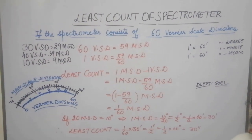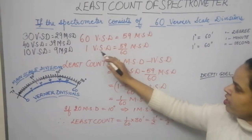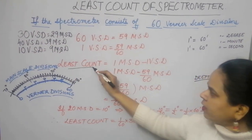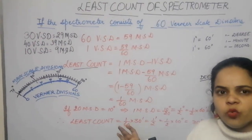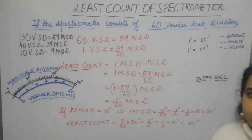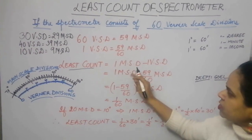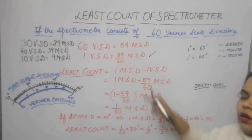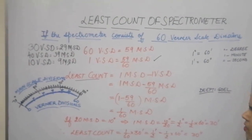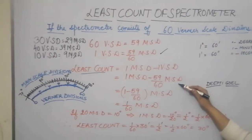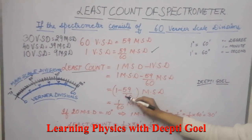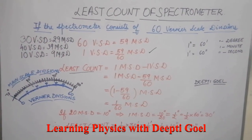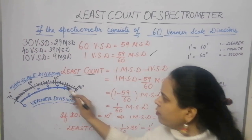Since 60 vernier scale divisions coincide with 59 main scale divisions, 1 vernier scale division equals 59/60 of a main scale division. The least count is always the difference between 1 main scale division and 1 vernier scale division. So least count = 1 MSD − 59/60 MSD = 1/60 MSD.